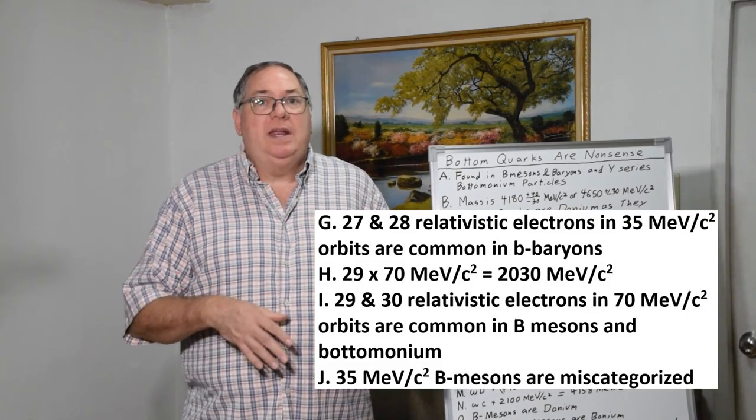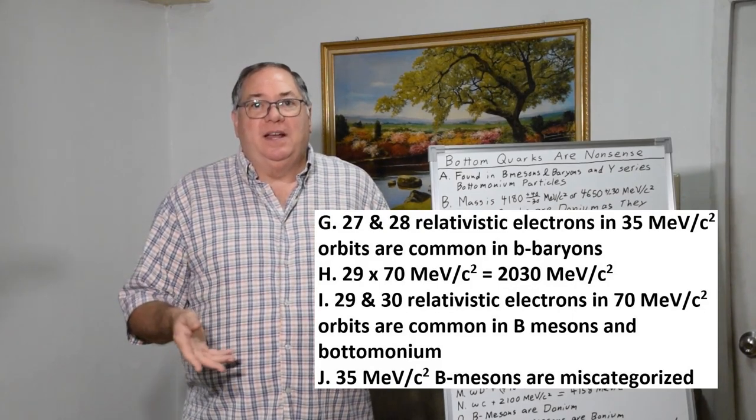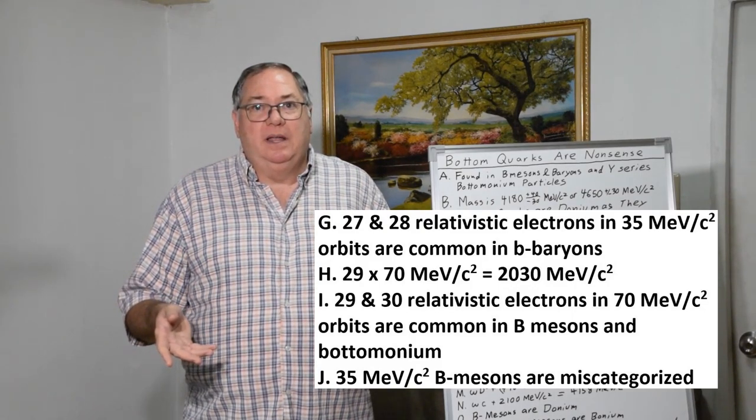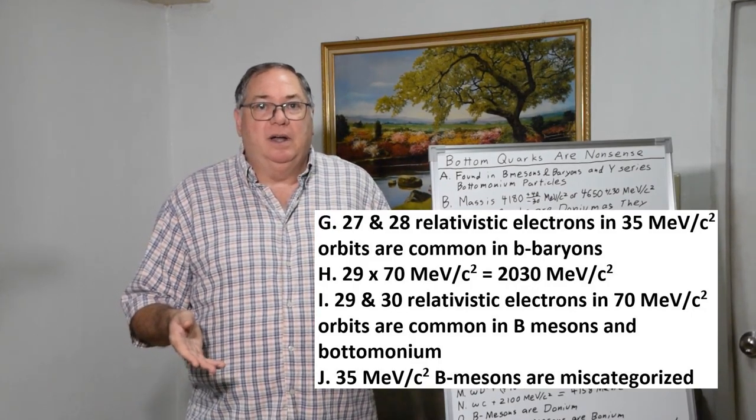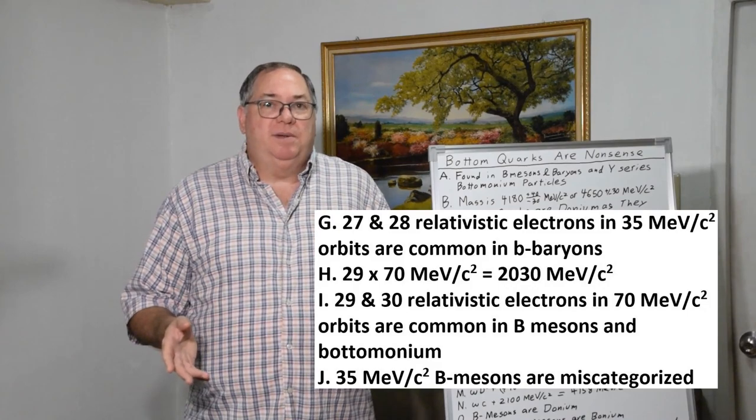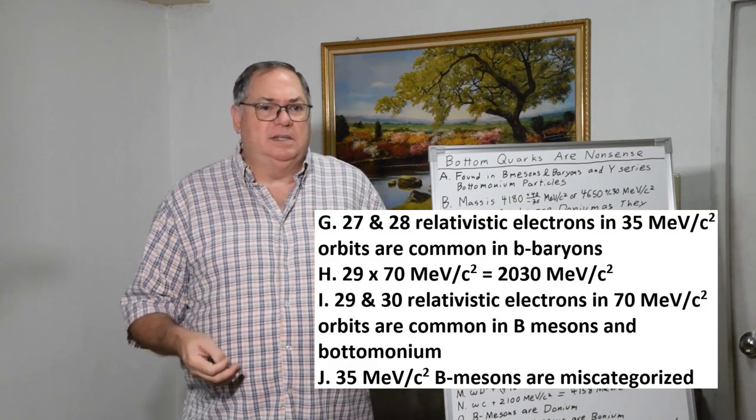Then you have 29 times 70 equals 2030 MeV/c² or 30 times 70 is 2100 MeV/c². Those orbits are typically found in the B mesons and also the bottomonium resonances.